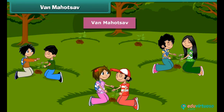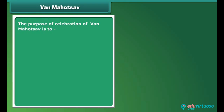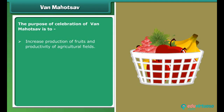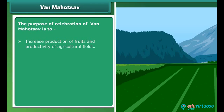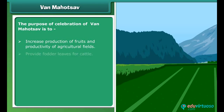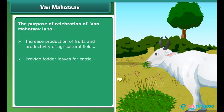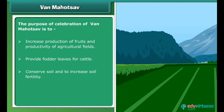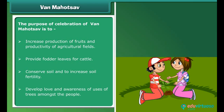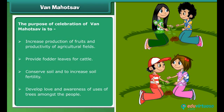Now let's know about Van Mahotsav. Van Mahotsav is a tree-planting festival celebrated in the month of July every year. We celebrate Van Mahotsav to increase production of fruits and productivity of agricultural fields, provide fodder and leaves for cattle, conserve soil, and increase the fertility of the soil.